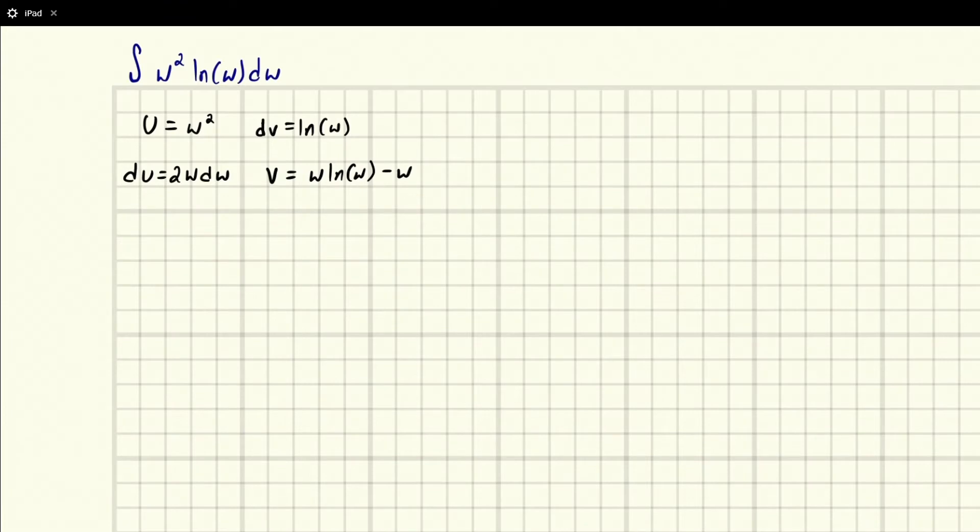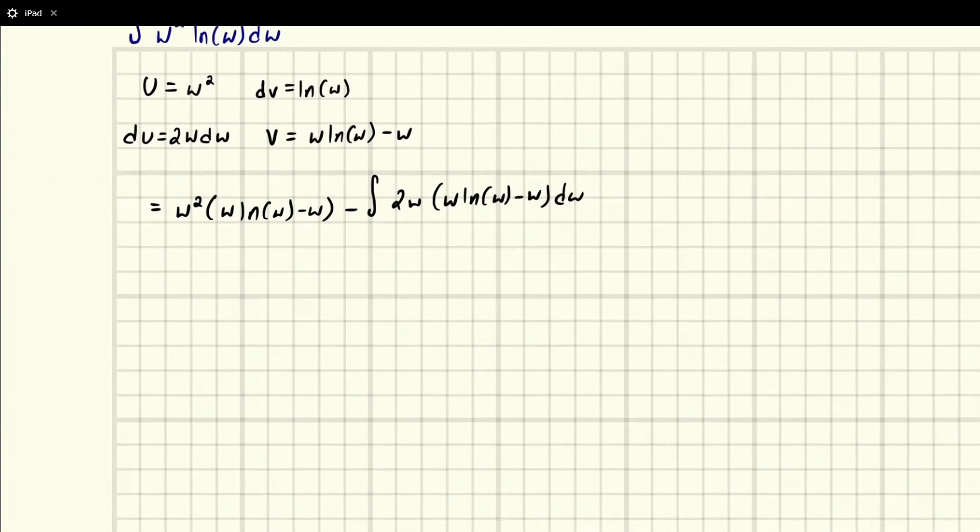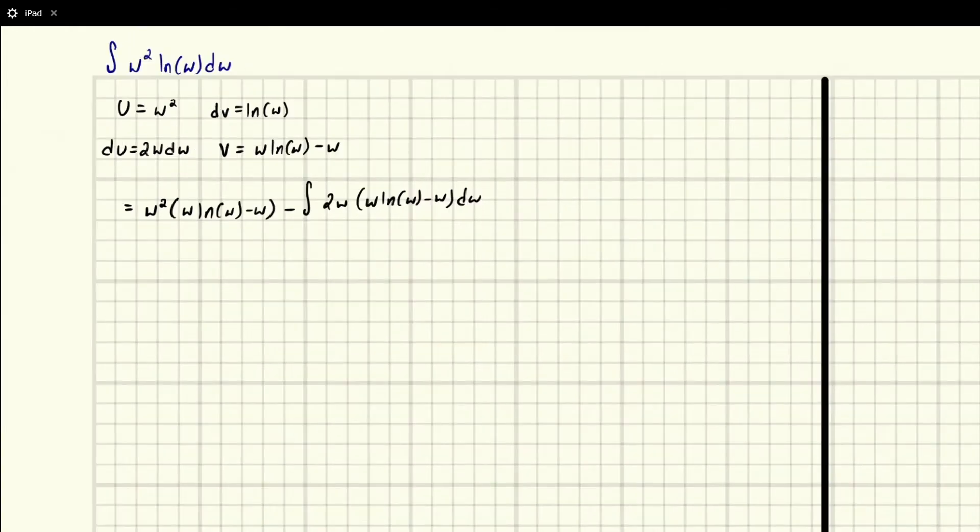And so knowing this, what we can do now is we can write in the next portion. So we've got w times w natural log of w minus w, minus the integral of 2w times w natural log of w minus w dw. And dw at the end here. So this is actually getting to be a little more gross, but we can still handle it.